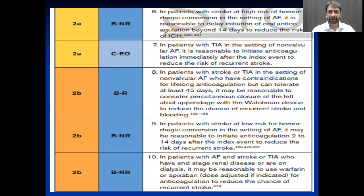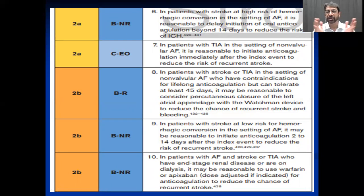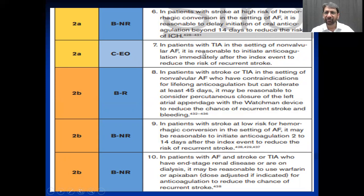These are further important points. In patients with stroke at high risk for hemorrhagic conversion in the setting of AF, it is reasonable to delay initiation of oral anticoagulation beyond 14 days to reduce the risk of intracranial hemorrhage — especially in very large infarcts; in consultation with a neurologist, there is concern the infarct may turn hemorrhagic, so stop your anticoagulant for 14 days then restart. However, in patients with TIA in the setting of non-valvular AF, it is reasonable to initiate anticoagulation immediately after the index event to reduce risk of recurrent stroke. If anticoagulation is contraindicated, lifelong anticoagulation alternatives need to be considered.